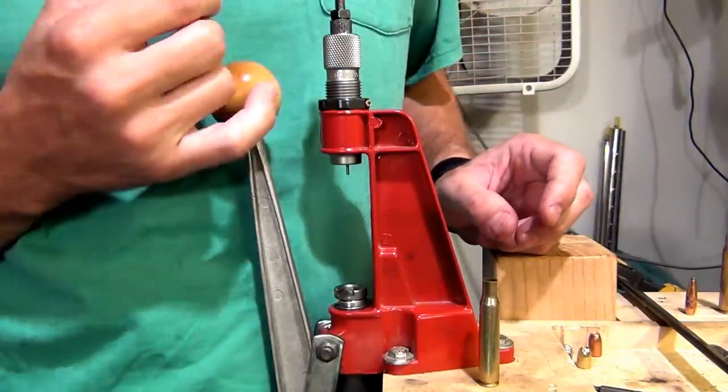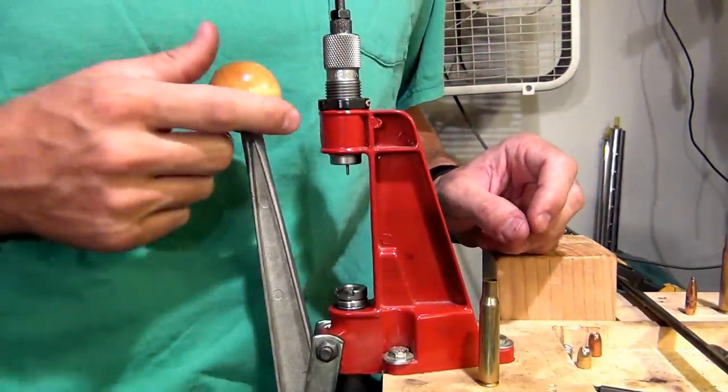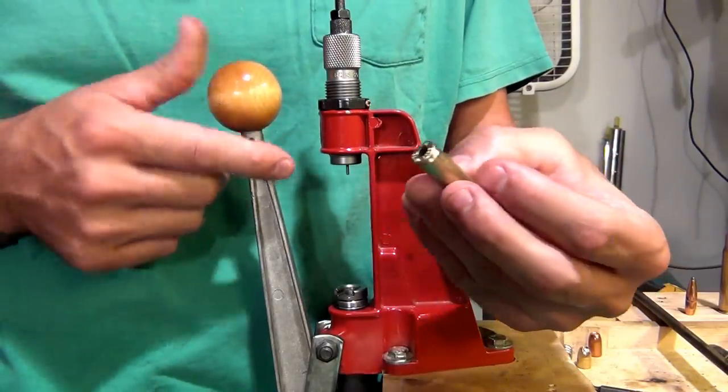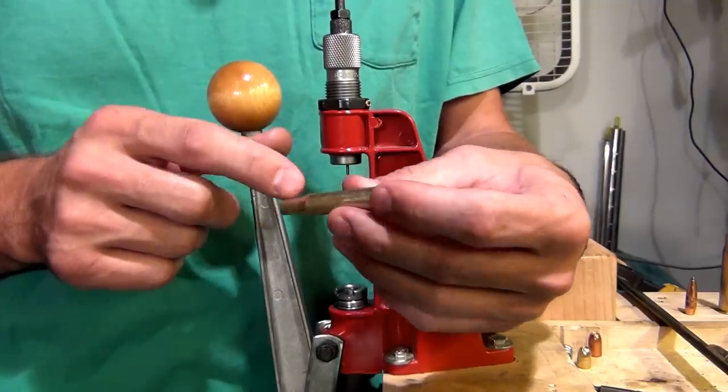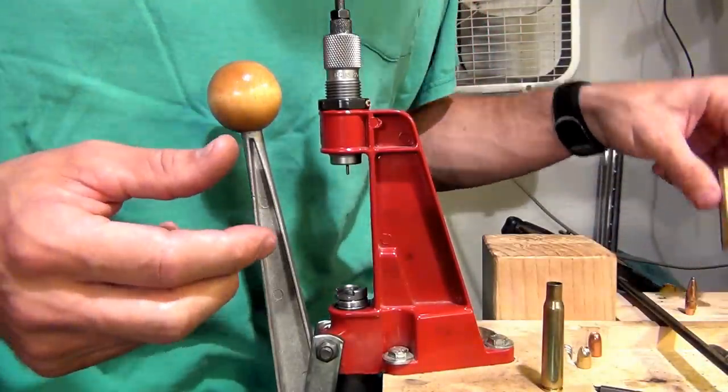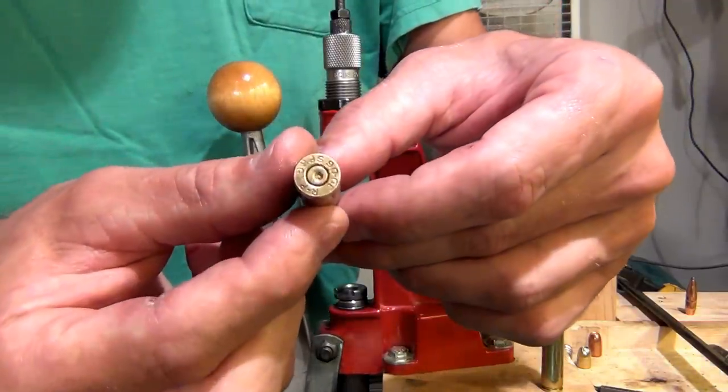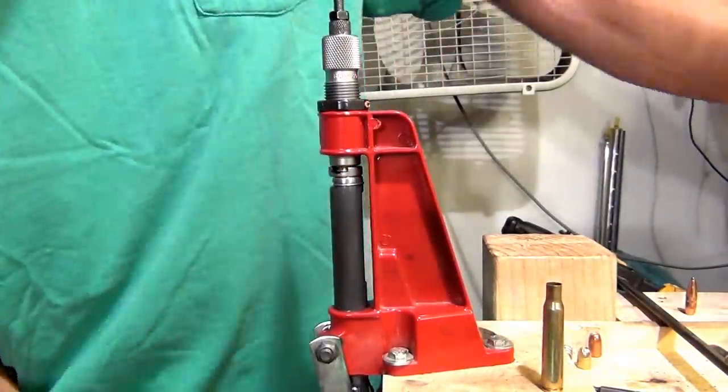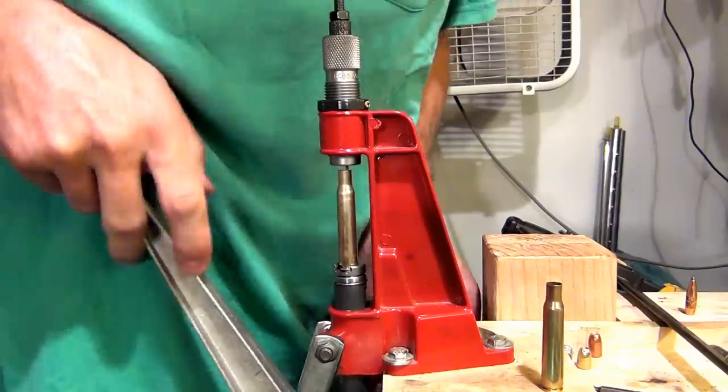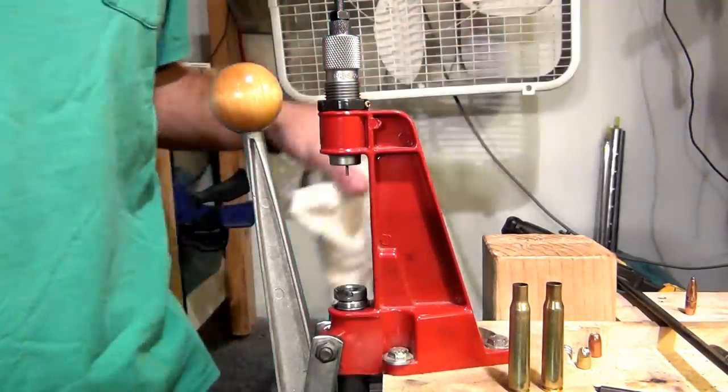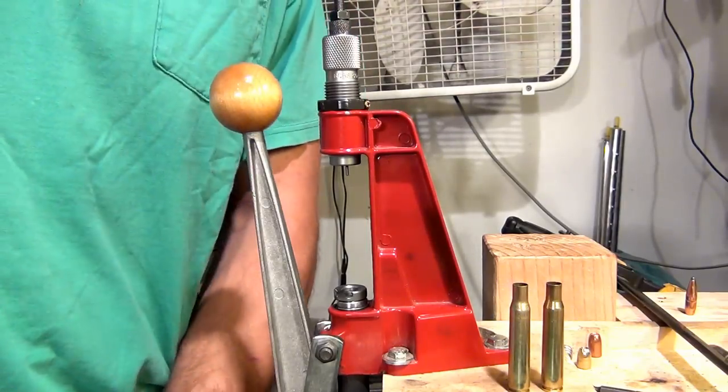Now one thing I need to explain is in this video, all the rounds that I'm going to be making are going to be dummy rounds. They're not going to have a live primer. They're not going to have powder. They're just going to be dummy rounds. So I'll go ahead and take a second case that's already been lubed, already been fired, and I'll show that process one more time. One, two. And that's all there is to it to setting up the decapping die for a rifle cartridge.